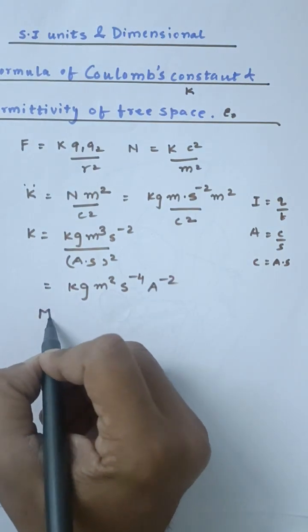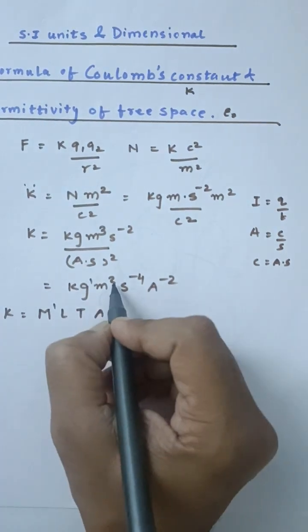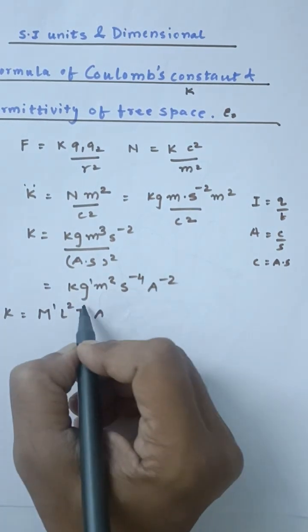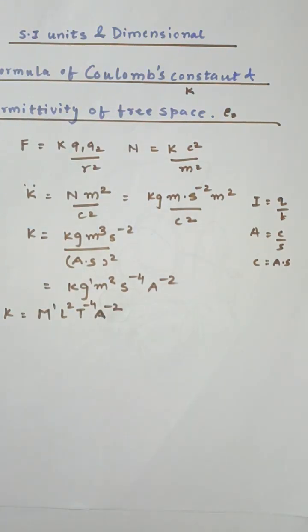So the dimensional formula can be written as M, L, T, A: mass raised to 1, length raised to 2, time raised to minus 4, and current raised to minus 2. So this is the dimensional formula for the dielectric constant.